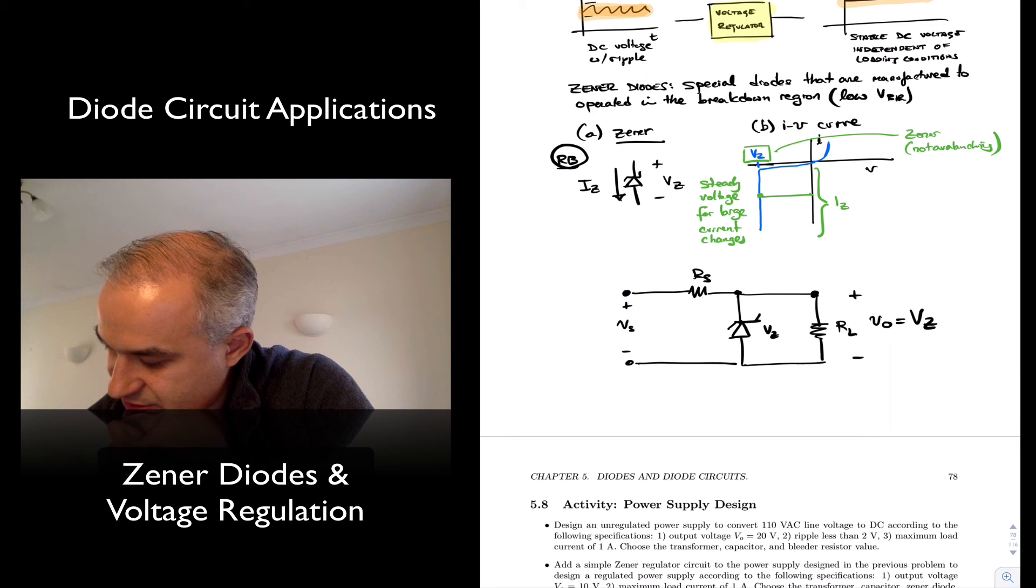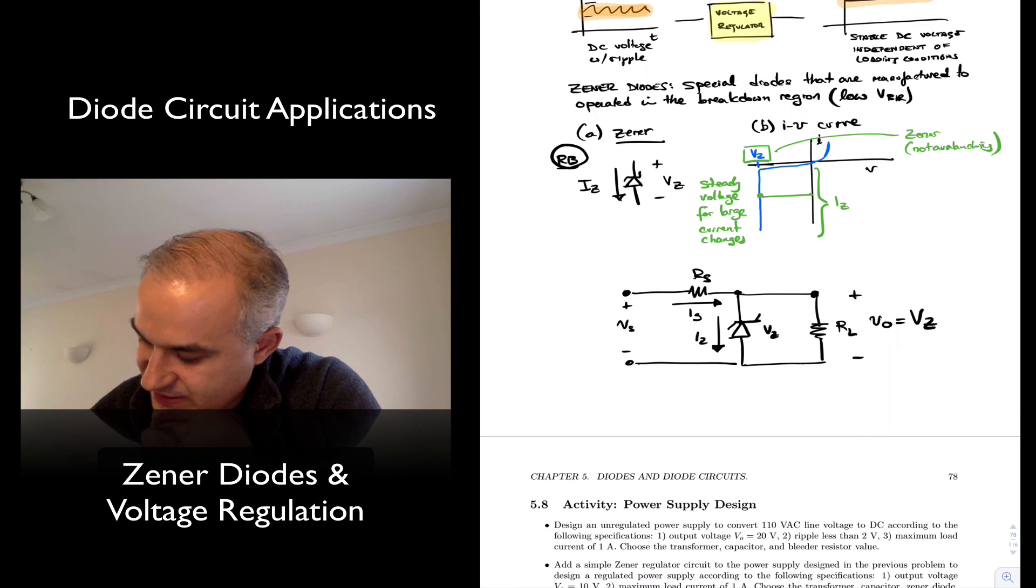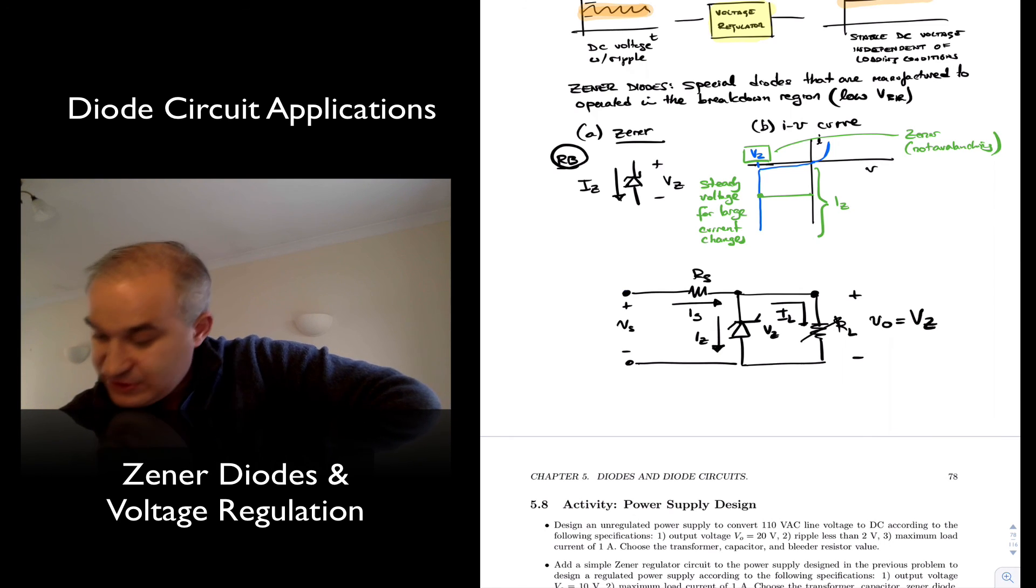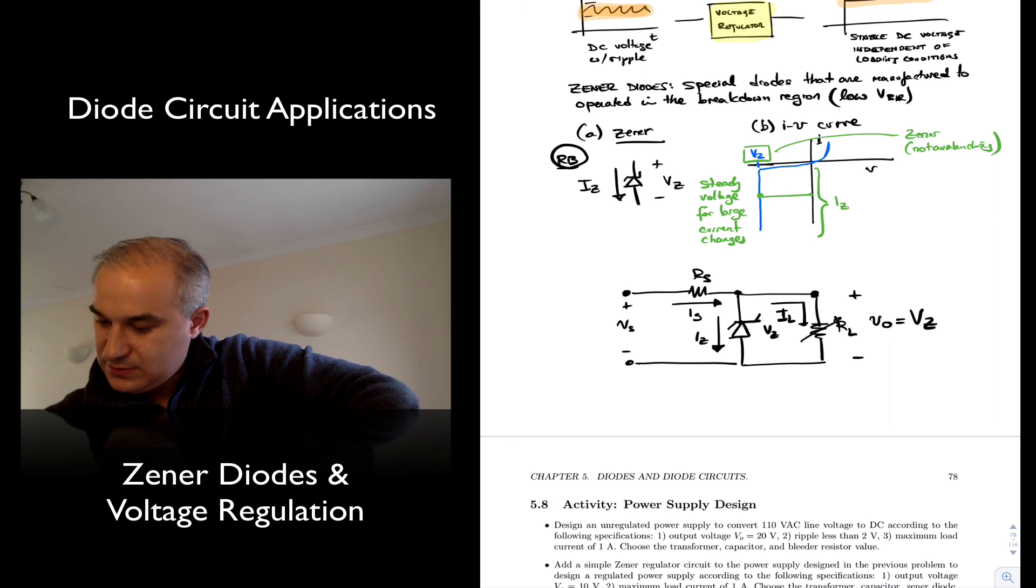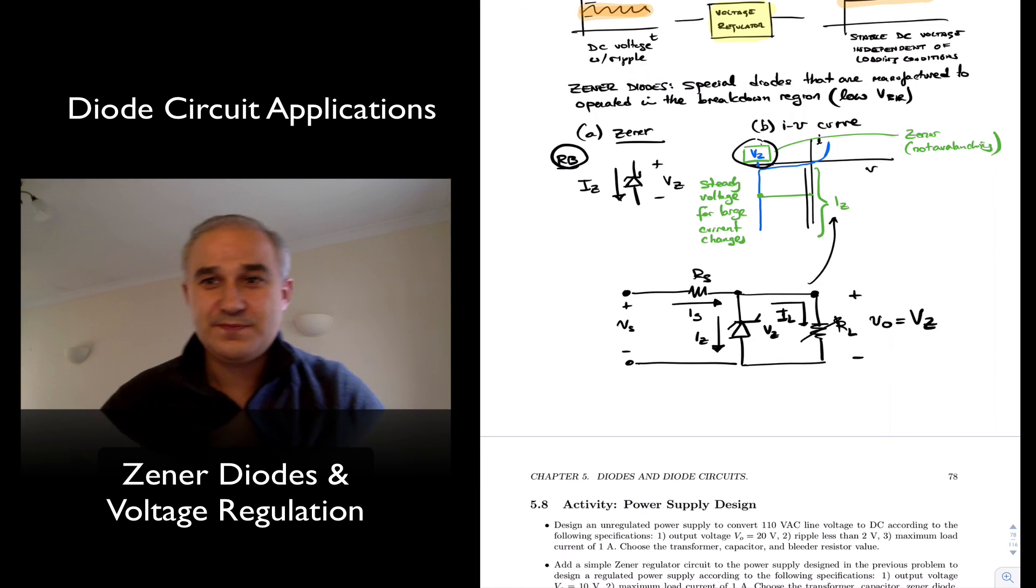As long as I have a current here, I'm going to call it IS, that is going to branch out into my Zener current and my load current, I load. As we change the value of the load, the load current is going to change. This load current becomes here. Significant changes in the current are still going to give me the same Zener voltage. Let's do a practical example in the next video. Thank you.